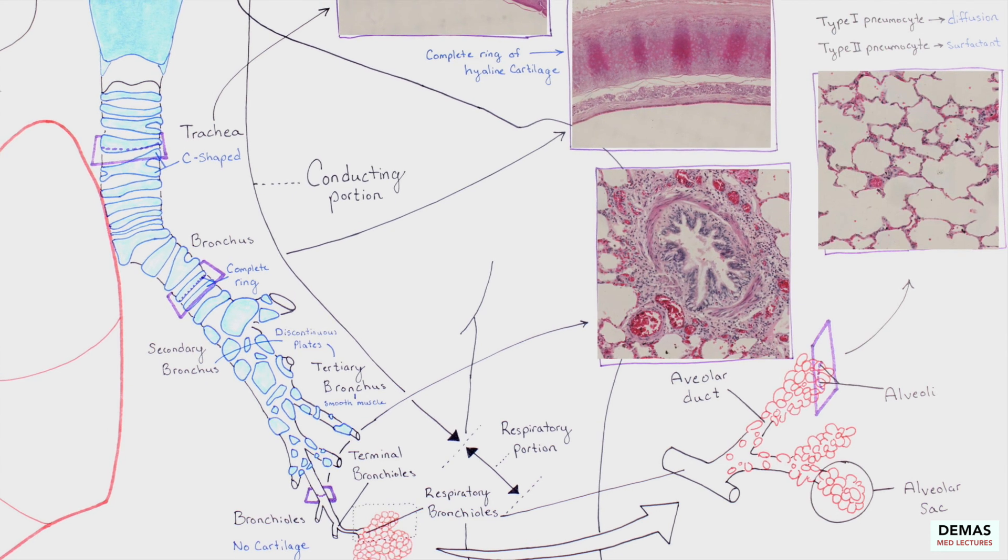Within the alveolar wall, remember the two important cell types, the highly abundant type 1 pneumocyte, which are thin and allow for gas exchange, and the type 2 pneumocytes that secrete surfactant to prevent lung collapse.